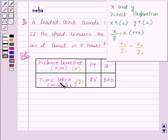Here, x is distance traveled by the truck and y is the time taken by the truck. Speed remaining the same, more will be the distance traveled, then more will be the time taken. So this is a case of direct proportion.